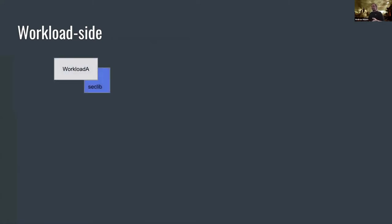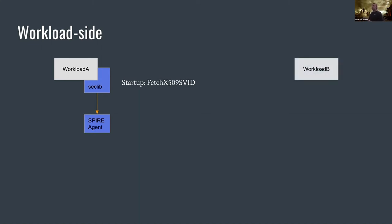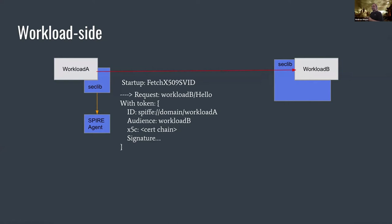Here's how it actually works. Say we have Workload A, onboarded to the security library. On startup, on behalf of Workload A, the security library calls the Spire agent and gets the X.509 SVID for it. When Workload A wants to talk to Workload B — also onboarded to the security library — the security library injects a token into the request containing the SPIFFE ID, the intended audience, the cert chain needed to validate the token, a signature, and other custom details based on our own needs.